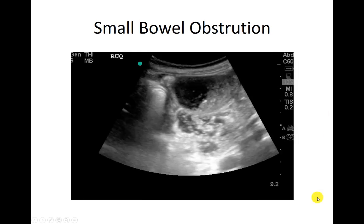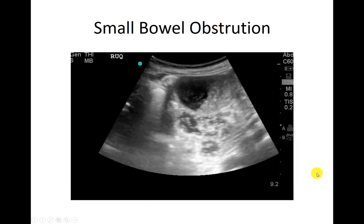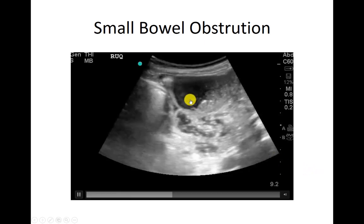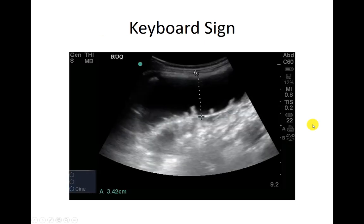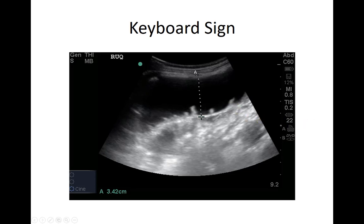Here's another example that looks like socks in a washing machine — definitely just circling around and not going anywhere because there's a blockage. Another thing to look for in SBO is the keyboard sign. These are the plicae circularis again — they get edematous because the whole bowel is fluid-filled. We have this large fluid-filled bit of bowel and then we see these edematous finger-like projections projecting in, which are significant for bowel edema and possible SBO.